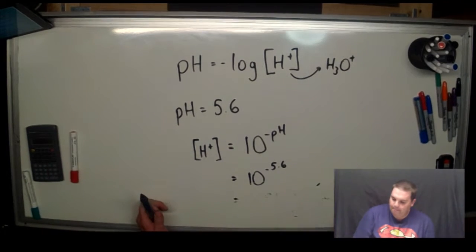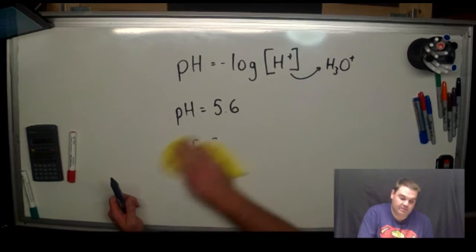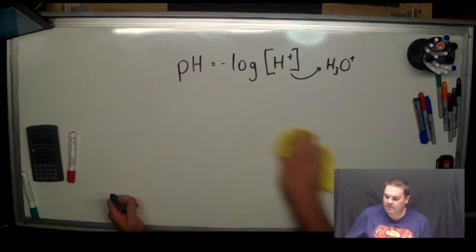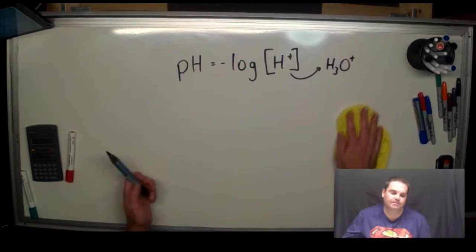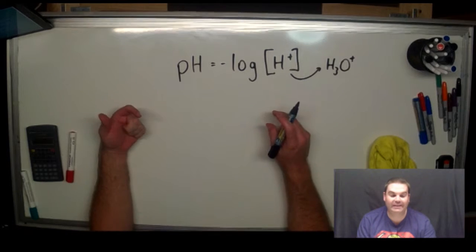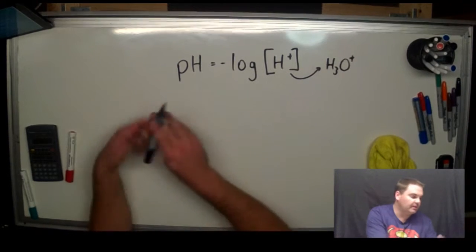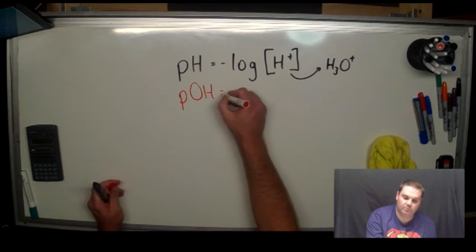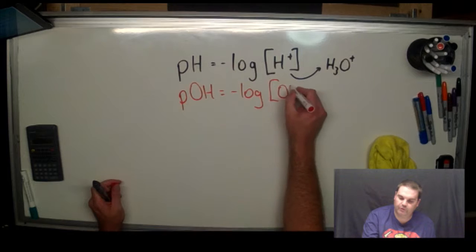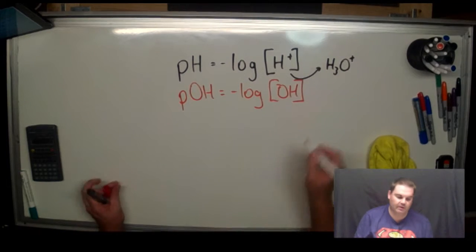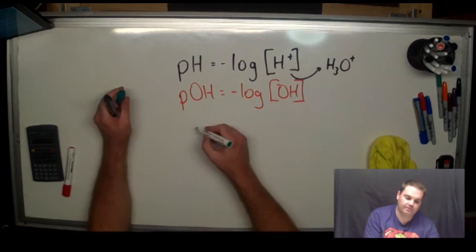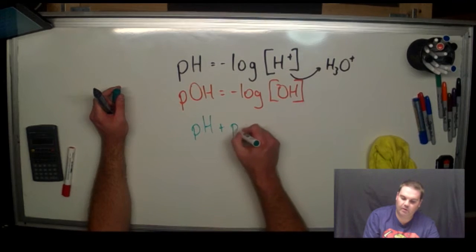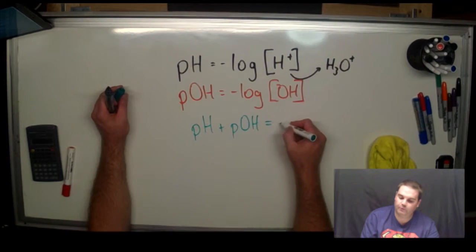What happens if you've got a base? How can you actually calculate the pH if you've got a base? Well, what you do is you bring in a second equation. pOH equals negative log concentration of hydroxide ions. And then you combine that with this equation: pH plus pOH is equal to 14. That's where we get our pH scale from.